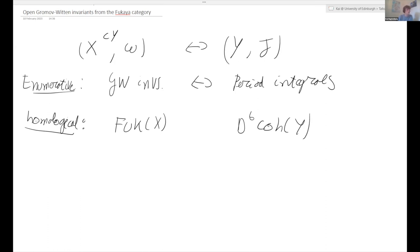He conjectured that if X and Y are mirrored, then there's a quasi-equivalence between these two categories. Moreover, he conjectured that if that is the case, then indeed, it is going to be the case that the Gromov-Witten invariants and the period integrals correspond to each other. So in particular, from the Fukaya category, you obtain closed Gromov-Witten invariants.